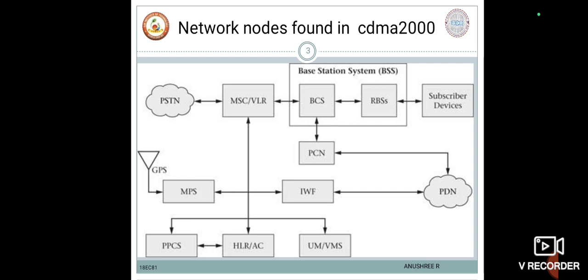Moving on, we have the Mobile Switching Center and the Visitor Location Register, that is VLR. The CDMA Mobile Services Switching Center MSC serves as an interface between the Public Switched Telephone Network PSTN and the Base Station Subsystem BSS. The MSC performs the functions necessary for the establishment of calls to and from the system's mobile subscribers, and in conjunction with other network elements, provides the functionality needed to permit subscriber mobility and roaming.